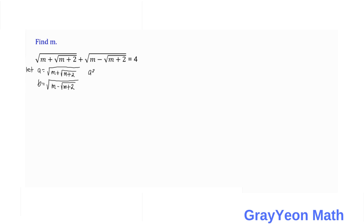If we square a, we have m plus the square root of m plus two. And if we square b, we have m minus the square root of m plus two. So if we find a squared plus b squared, based on what we got, we have 2m, because the square root of m plus two terms cancel out.